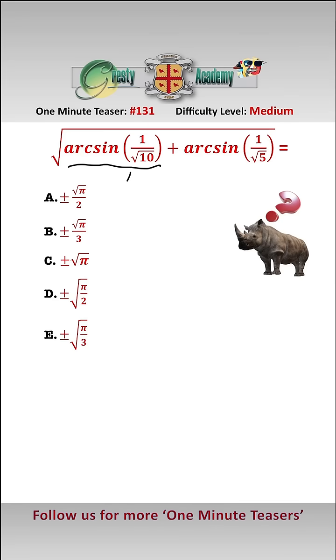Let's let arcsin(1/√10) be alpha and arcsin(1/√5) be beta, and then what we want is the square root of alpha add beta.